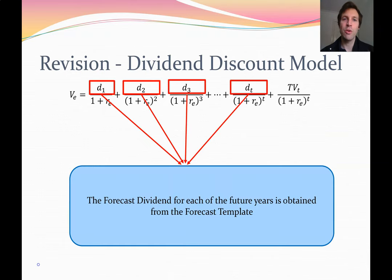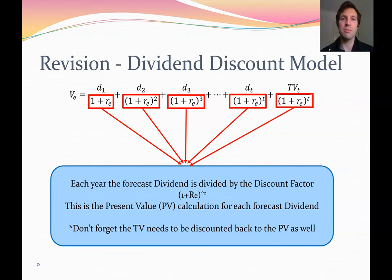When the formula is expressed with D1, D2, D3, and Dt, those refer to the dividend each year — numbers you will have forecast in your forecasting template. D1 is the dividend expected to be paid in year one, D2 in year two, and so on for however many years you've done the forecasting. Dt is simply the final year of forecasting. Each dividend is then divided by the discount factor — that is, one plus RE, the cost of equity capital, raised to the power of t — to present-value it back to the current time.